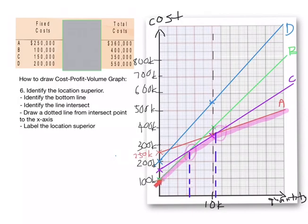Last label the location superior. For the 1st superior, it belongs to green line which is B, Superior B. For the 2nd superior, it belongs to the purple line. So this is a superior C. And last superior, it belongs to the red line which is A. So this is superior A.